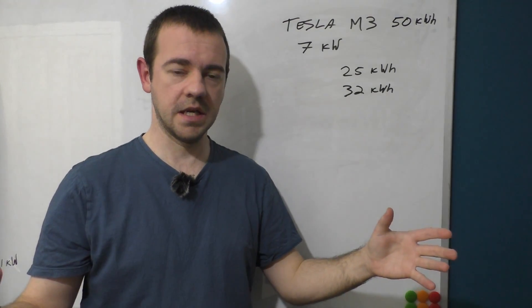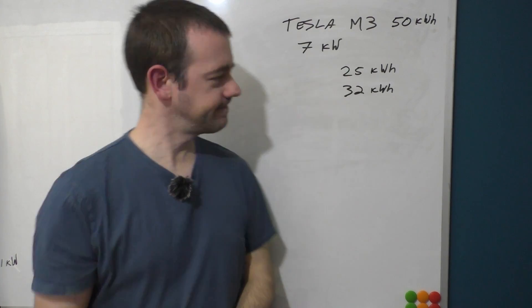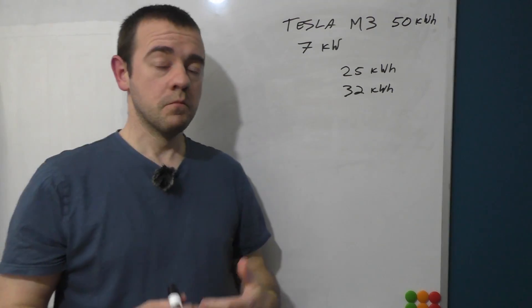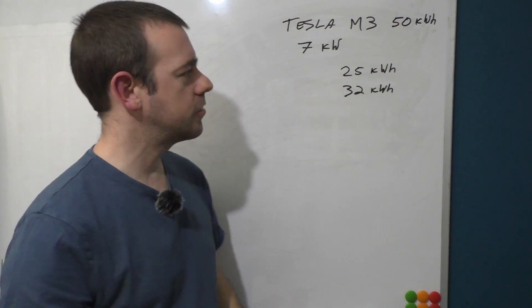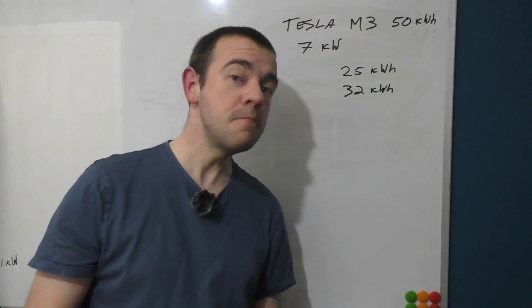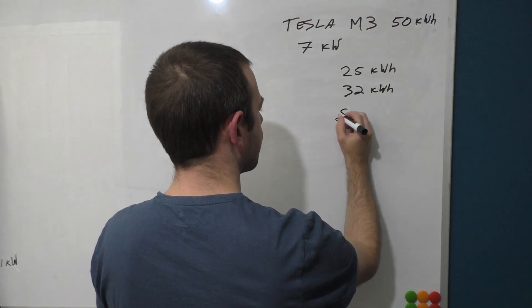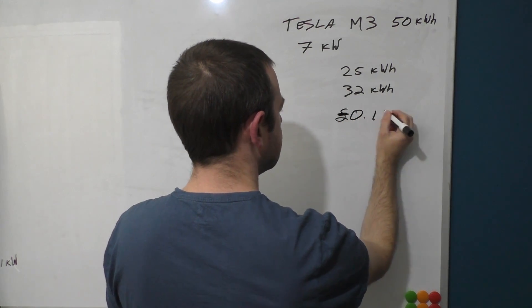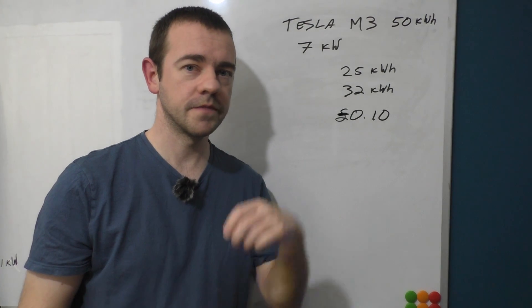But what about in terms of how much it's going to cost you on your tariff at home? Now again, I'm going to use easy figures. Let's imagine you're on a 10 pence per kilowatt-hour tariff, so you basically pay 10p for every kilowatt-hour you use on your home tariff.